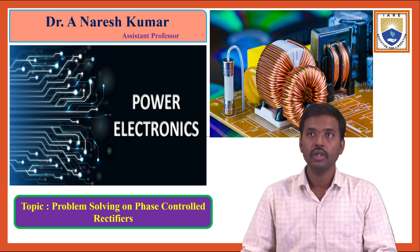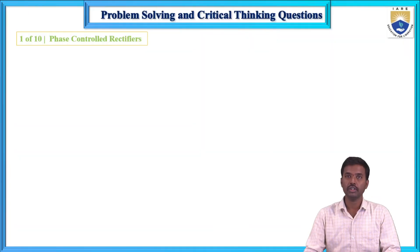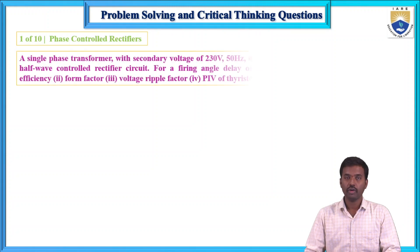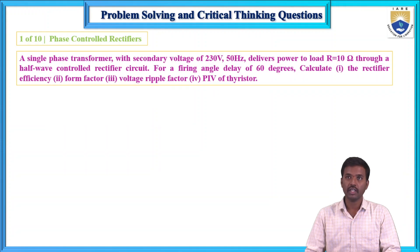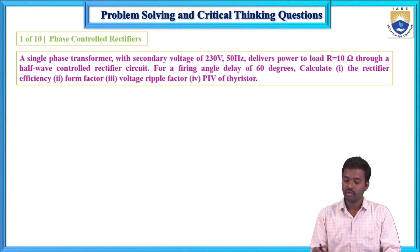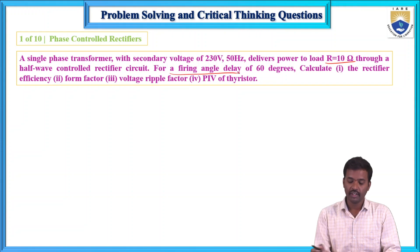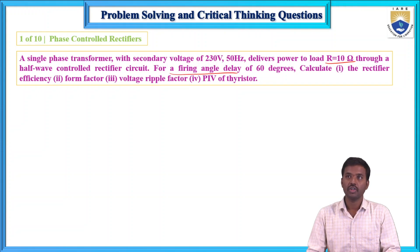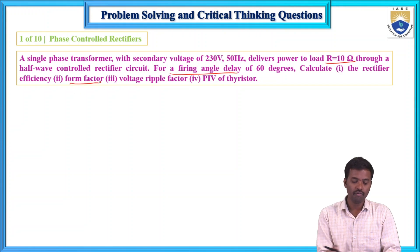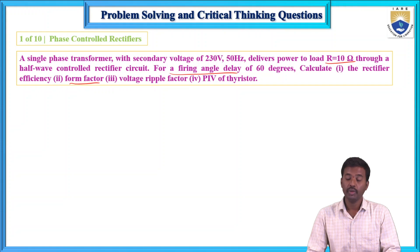In the question bank there are a total of 10 questions in the phase control rectifier — that is module 2 problem solving and critical thinking questions. The first question: a single phase transformer with secondary voltage of 230 volts, 50 Hz, delivers to a load R equals 10 ohms through a half-wave controlled rectifier circuit, for a firing angle delay of 60 degrees. Calculate the rectifier efficiency, form factor, ripple factor, and peak inverse voltage (PIV) of the thyristor.